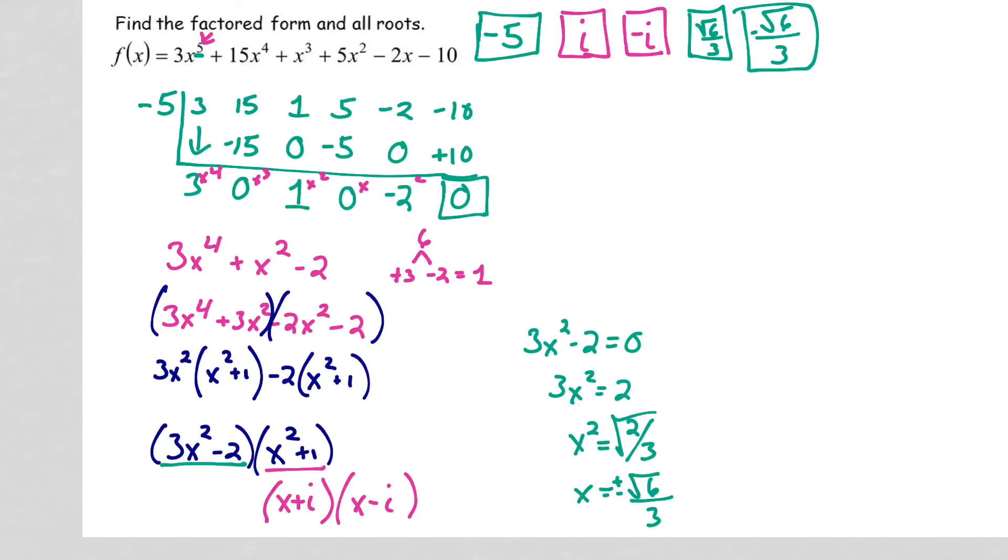There are all five of my roots, but now I need to write this in factored form. So this one would be x plus five. And then I'm going to take my three x squared minus two. And then I would take my x plus i and x minus i.